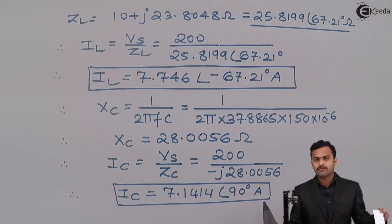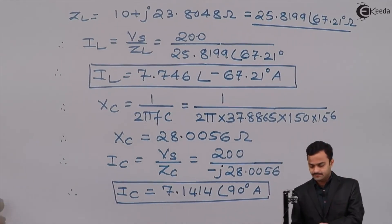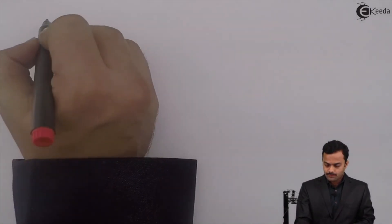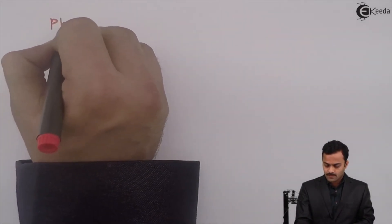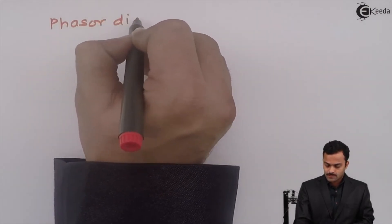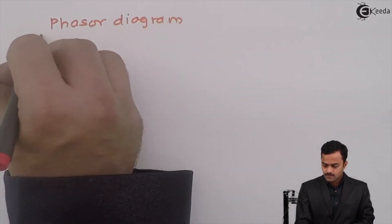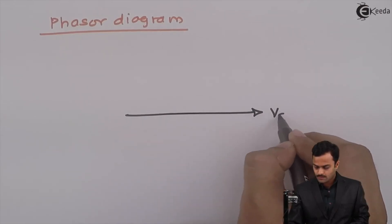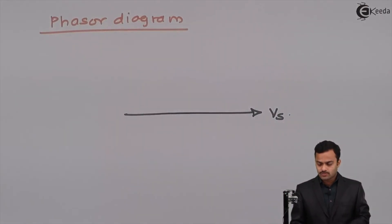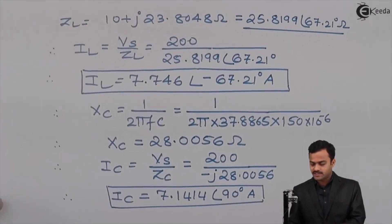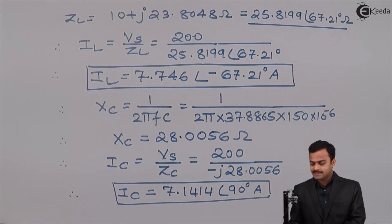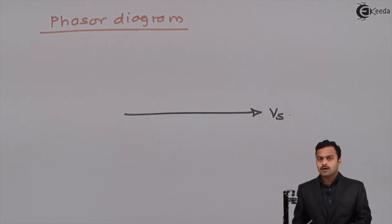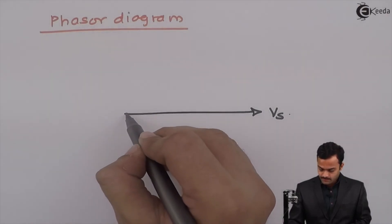So now we know all the phasors, let's complete the phasor diagram. So it's a parallel circuit, so in parallel circuit what reference you will take? So I will take voltage as a reference. With respect to voltage as a reference, I am getting current flowing through the coil as 7.746 at an angle minus 67.21 degree, so IL will be like this.